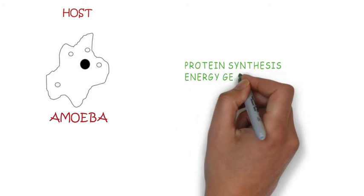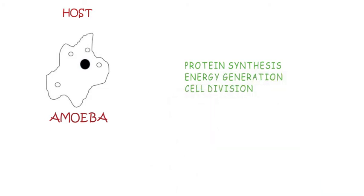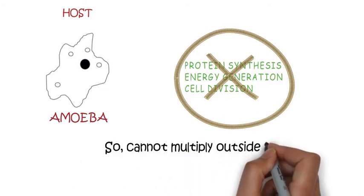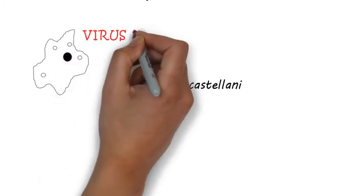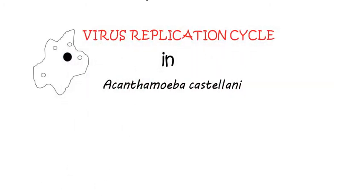These particles lack the machinery necessary for protein production, energy generation, and cell division, thus confirming their viral nature. Pandora viruses were grown on cells of Acanthamoeba castellanii to study the replication cycle of these viruses.